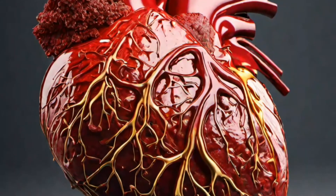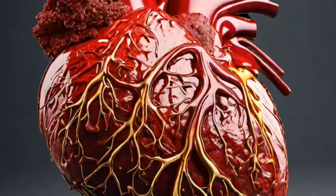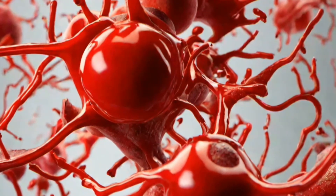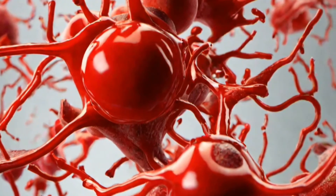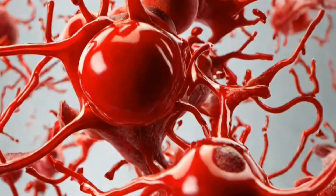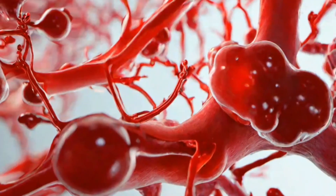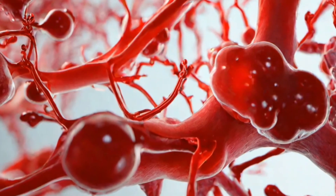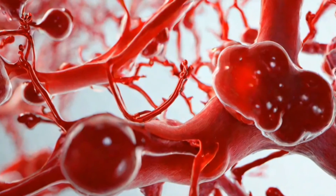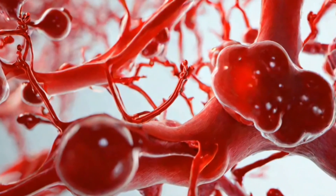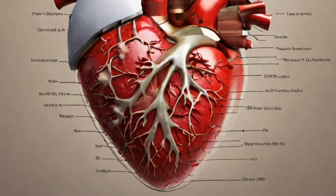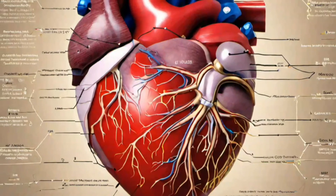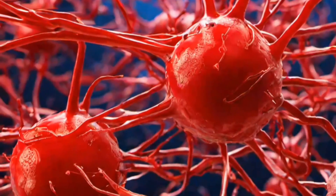Functions of the circulatory system. Transportation — the system transports oxygen, nutrients, hormones, and immune cells to various parts of the body, and also carries away waste products for elimination. Gas exchange — the system facilitates the exchange of oxygen and carbon dioxide in the lungs and tissues. Nutrient delivery — nutrients absorbed from the digestive system are transported via the circulatory system to cells for energy and growth. Waste removal — metabolic waste products, such as carbon dioxide and urea, are transported to organs for elimination.